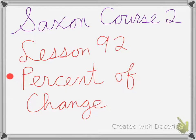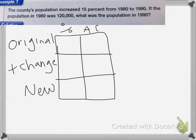Saxon course 2 lesson 92 is on percent of change. The county's population increased 15% from 1980 to 1990. If the population in 1980 was 120,000, what was the population in 1990?